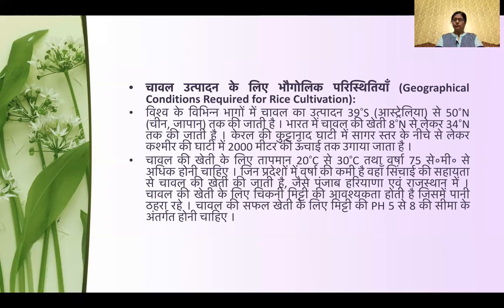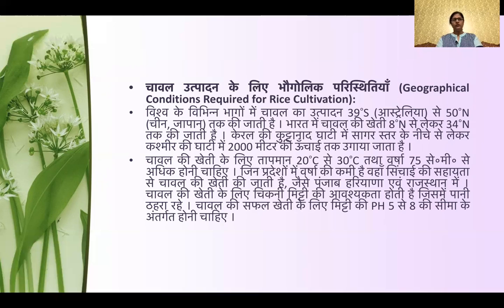In Kerala, the Kuttanad region is below sea level, and in Kashmir, rice is cultivated up to 2000 meters altitude. We can see on India's map that the cultivation of rice is very widespread, and it extends across varied elevations and soil types.